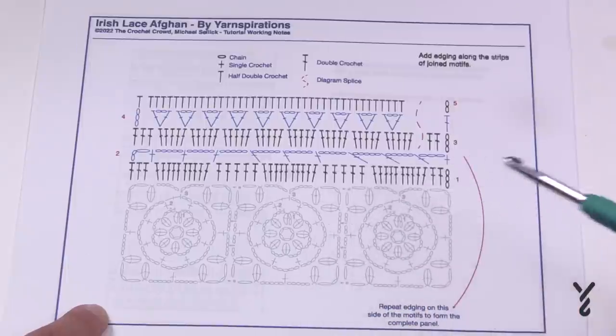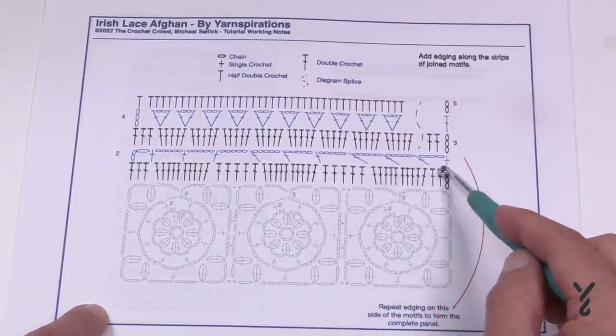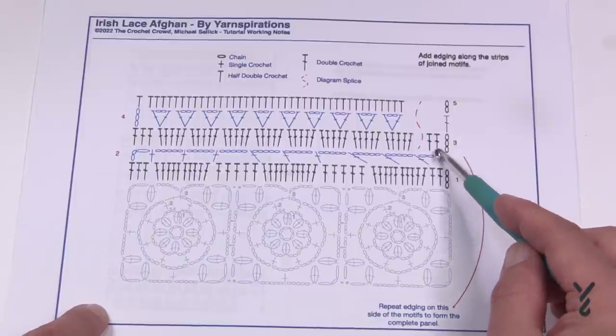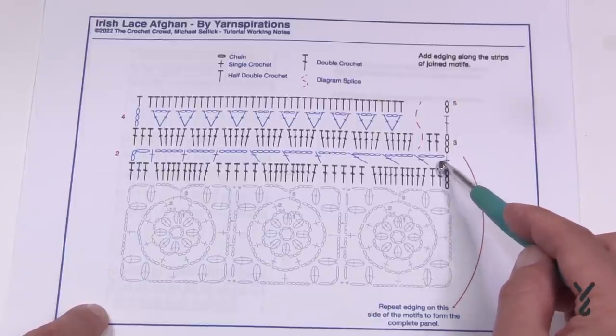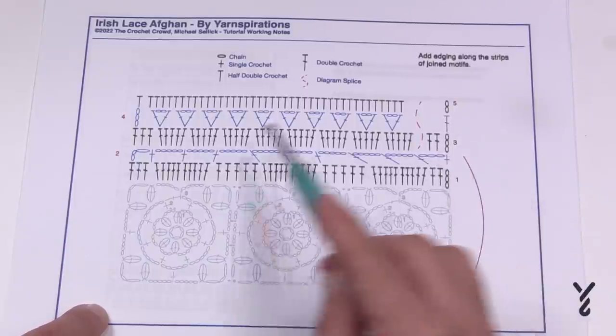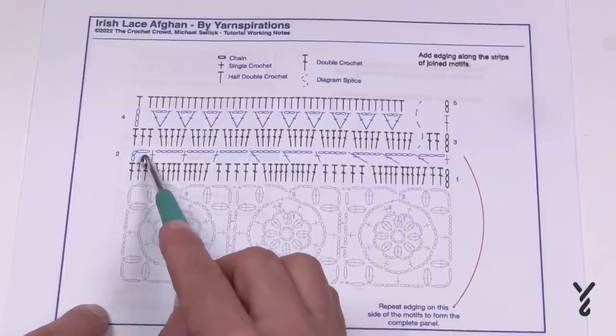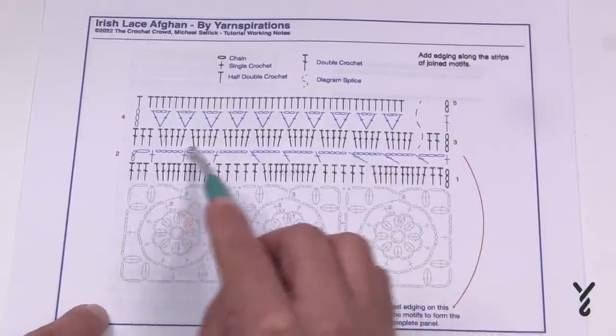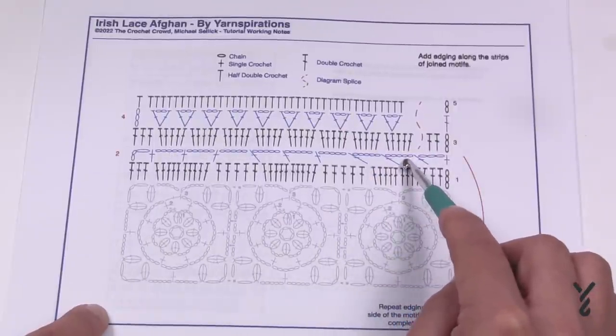So even though it looks a little askew here in the pattern it actually will be even out. In row number three you're going to chain up three and then you're going to put two double crochets into this chain three spot. When you look at it from the other side there's two double crochets in this spot here and then one into there.